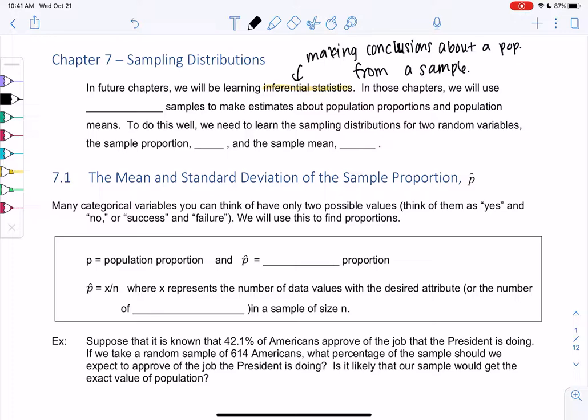So in those future chapters, we will use many samples. Rather than just taking a single sample, we'll take a lot of samples to make estimates about population proportions and population means. To do this well, we need to learn the sampling distributions for these two new random variables: the sample proportion p-hat and the sample mean x-bar. In this chapter, we'll get into what is p-hat and what is the sample mean.